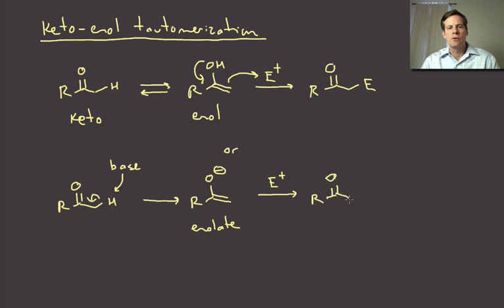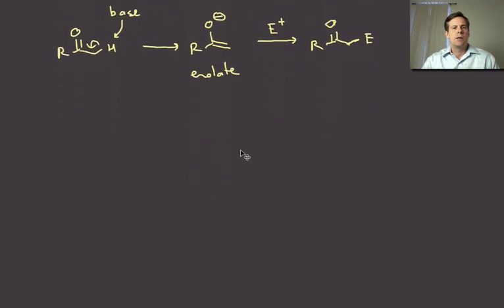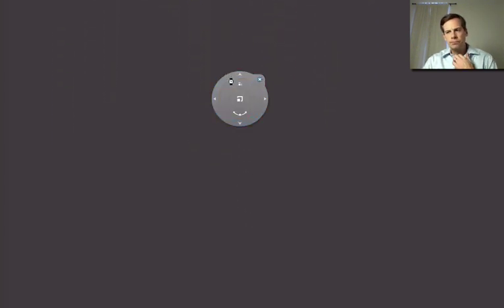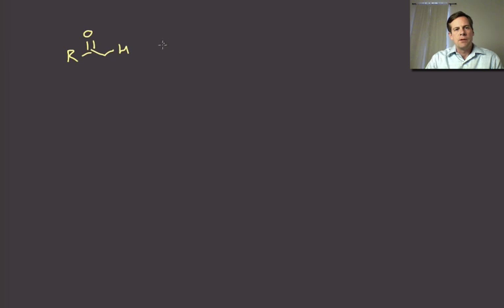We can also do alpha substitution chemistry with enolates. All of the reactions that we're going to talk about for this unit and the next unit are going to involve this type of reactivity where we use enols or more usually enolates. First let's talk a little bit more about this keto-enol tautomerization.